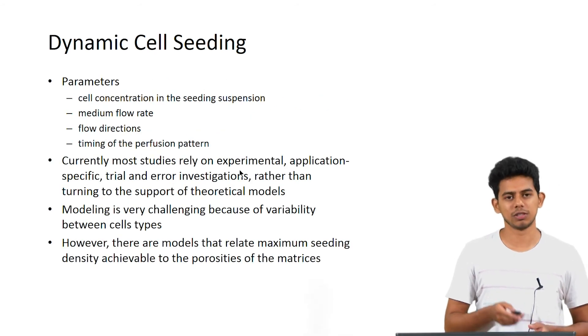The main parameters which determine how the cells are seeded are the cell concentration that you use for your seeding, the flow rate of the medium, the flow direction, and timing of perfusion pattern.